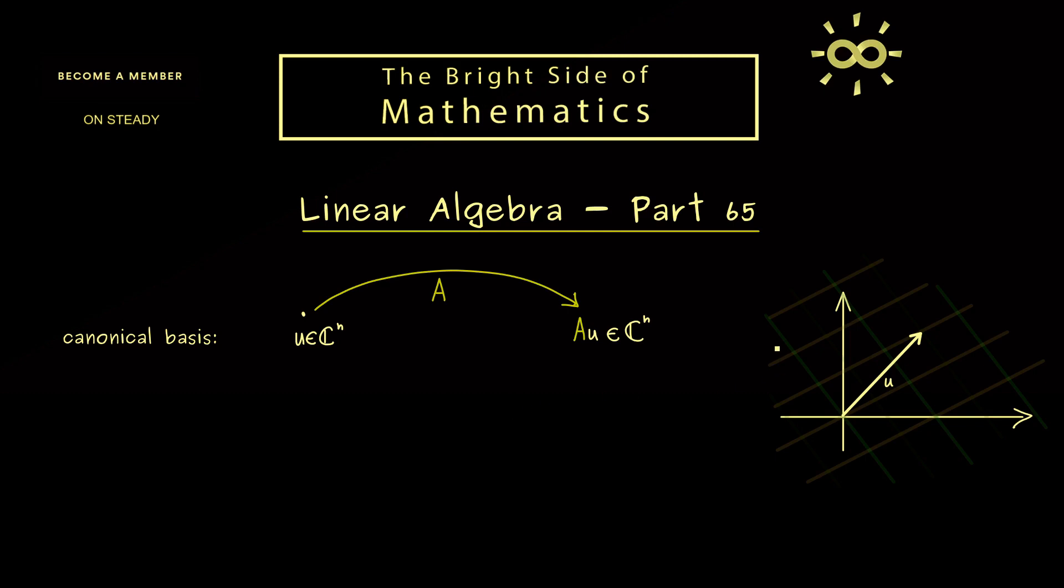However, now we have learned that we can also use an alternative grid, an alternative coordinate system to describe this operation. And indeed for this one we need eigenvectors of A.